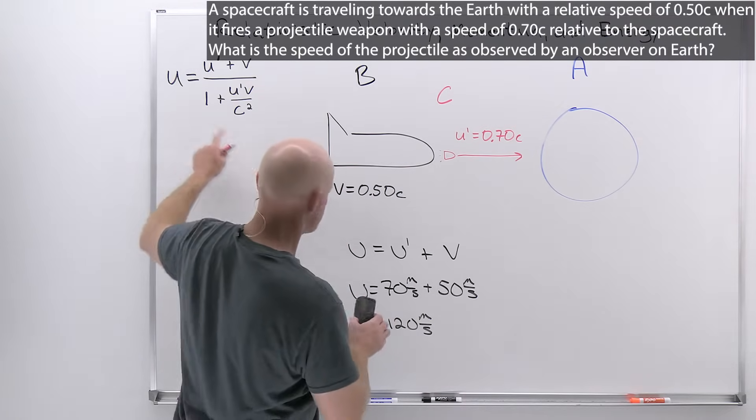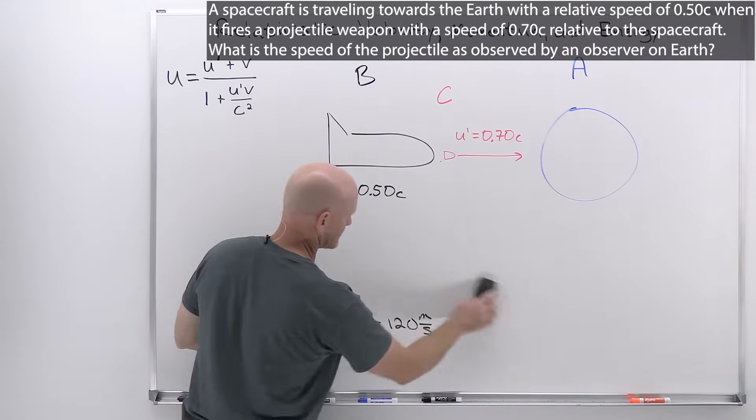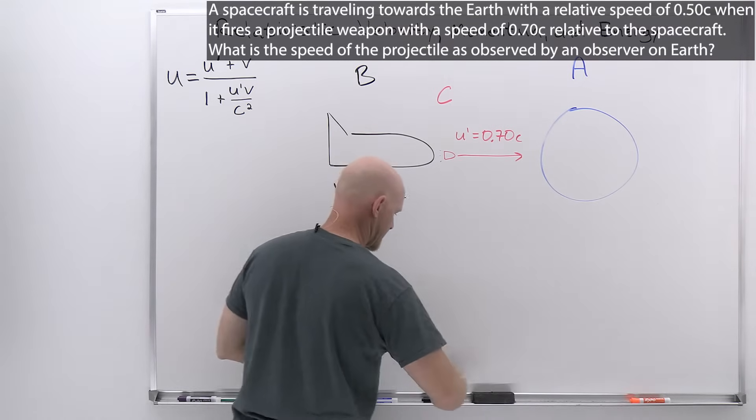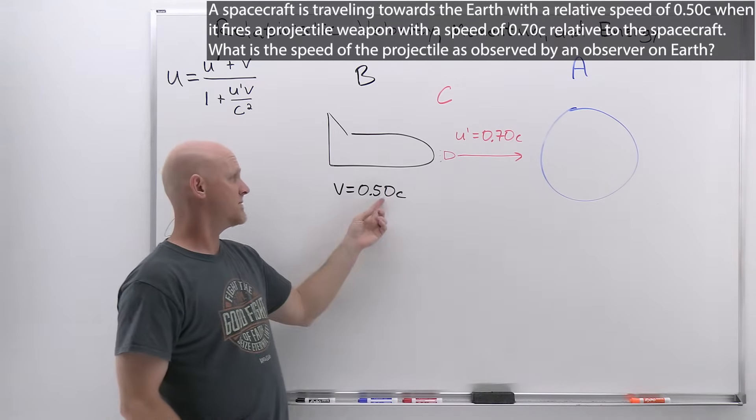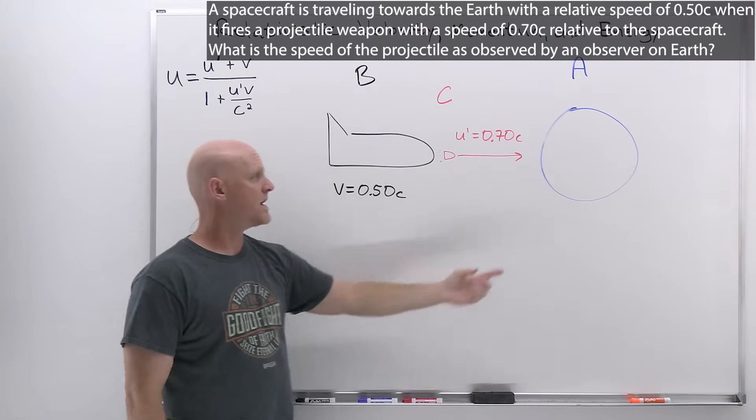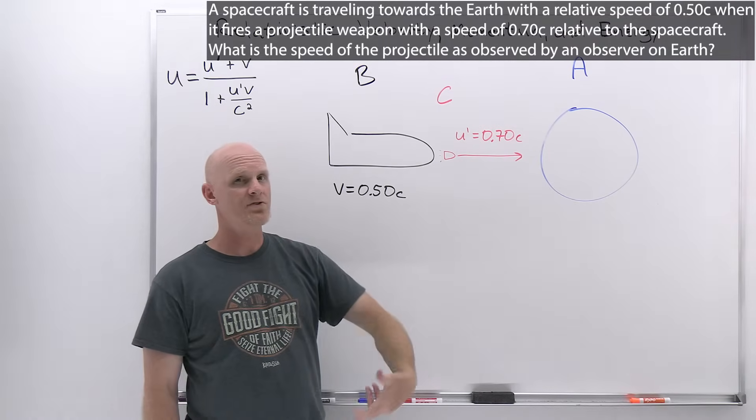Our new formula here is this one, and we're going to have to make this just a little more complicated of a calculation. The key is, if we just added these together, the relative velocity relative to the earth would come out to faster than the speed of light, 1.2 times the speed of light.